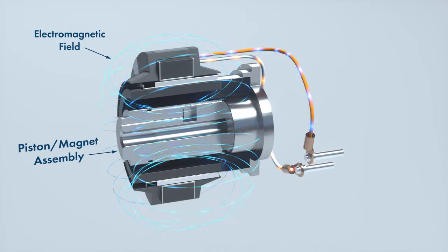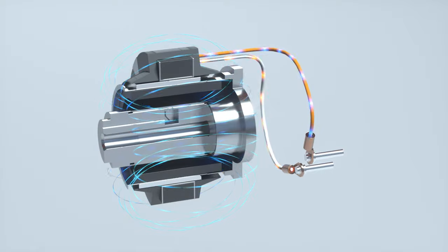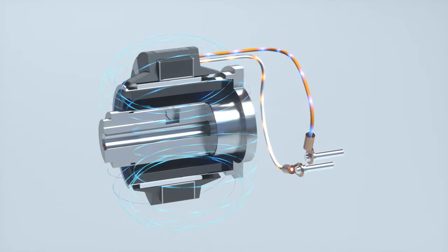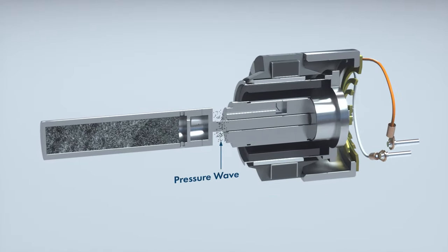The magnetic field interacts with permanent magnets attached to the piston assembly and causes the piston to oscillate. The piston's movement creates a pressure wave that causes the displacer assembly to move.